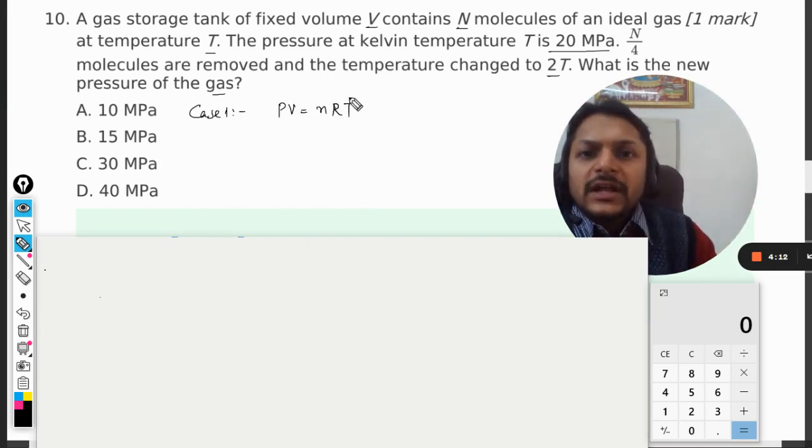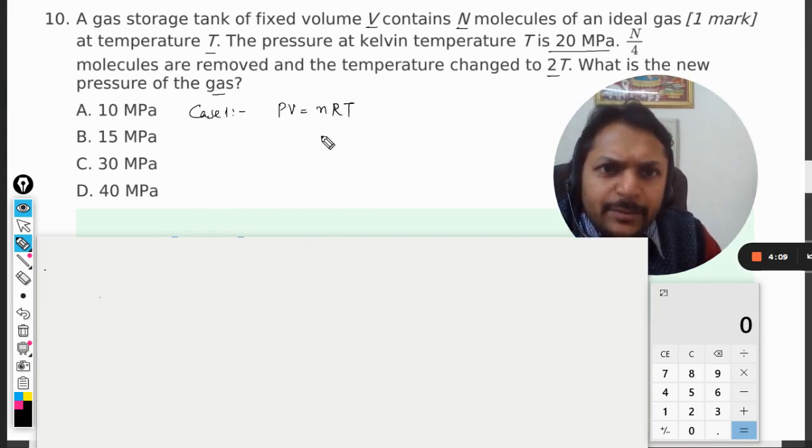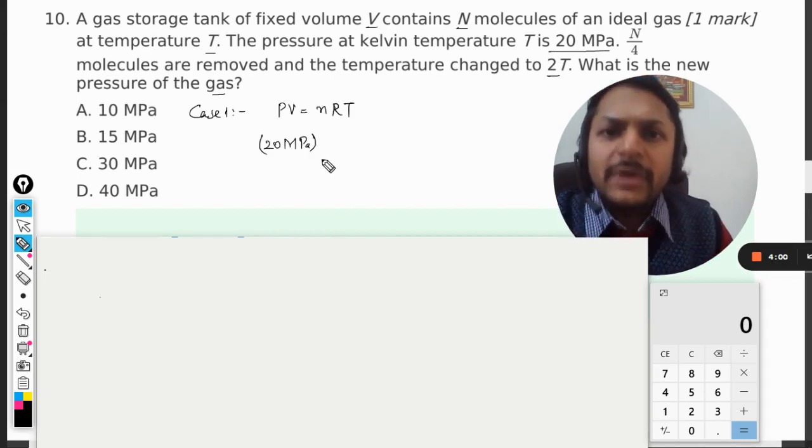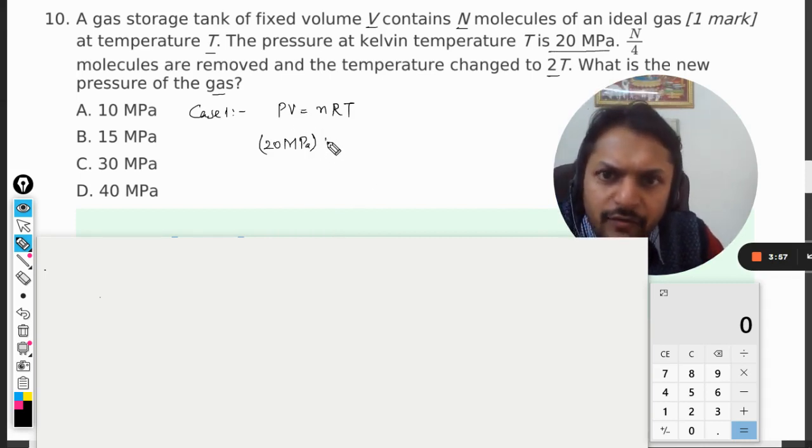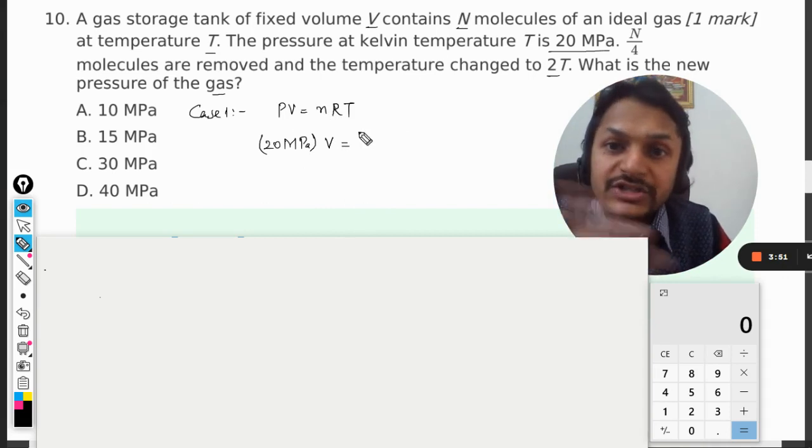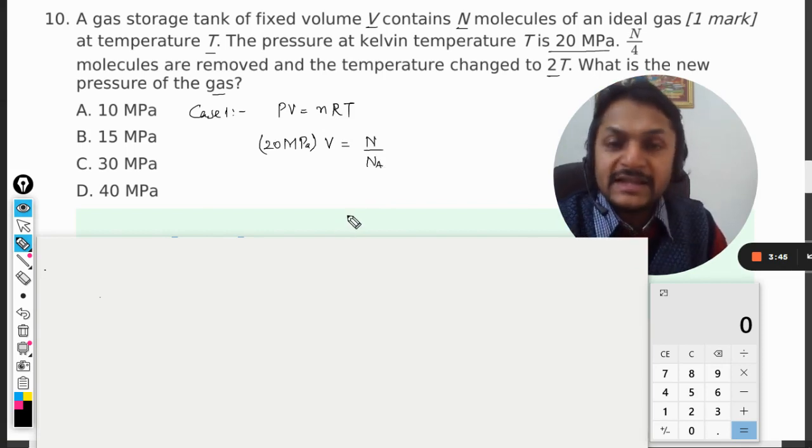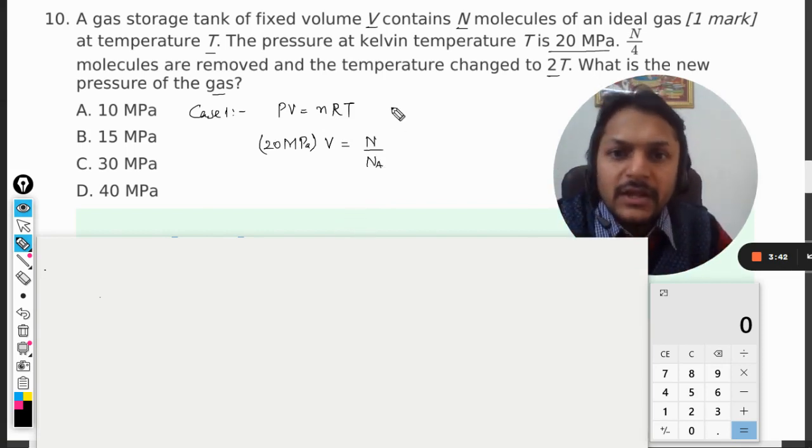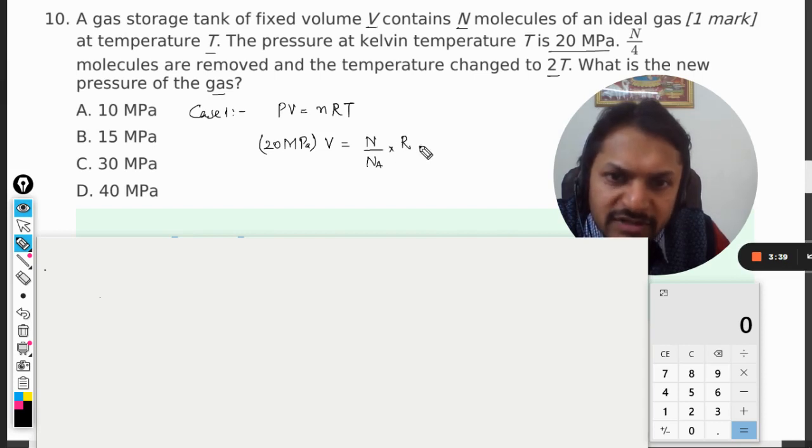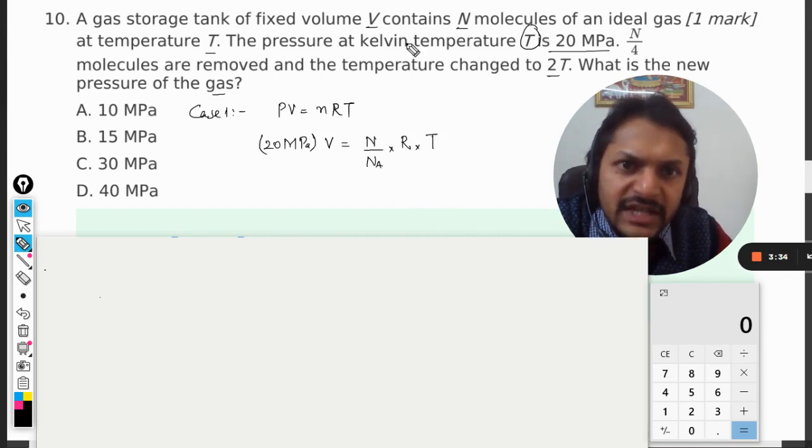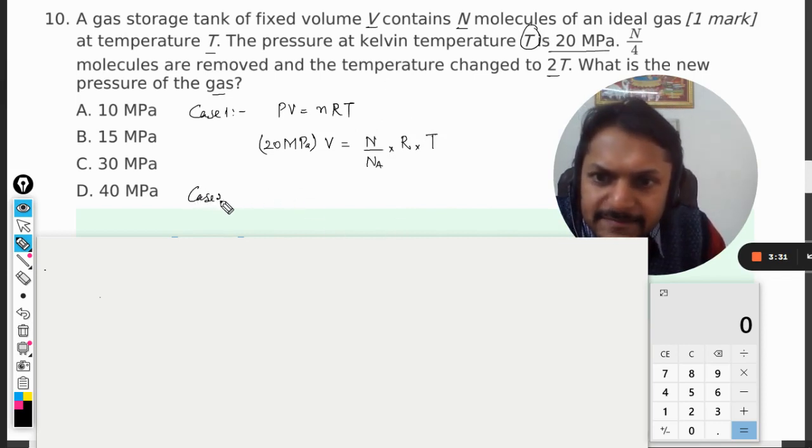Let's start filling the equation. The pressure is given as 20 MPa, and I'm writing the units also. V is the volume that is fixed, and there are N number of molecules. Small n is number of moles. How do you find number of moles? Total number of molecules divided by Avogadro's number, that is 6.023 × 10^23, multiplied by the universal gas constant, which is constant every time, and the temperature is taken as T.